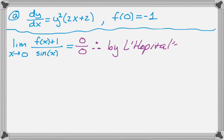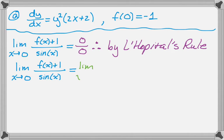So by L'Hopital's rule, we know that the limit that we were given is actually equal to the limit of the derivative of the numerator, which is f'(x), over the derivative of the denominator, which is cosine.